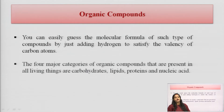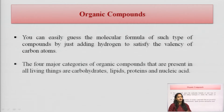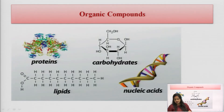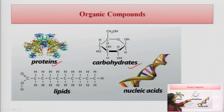The four major categories of organic compounds present in all living things are carbohydrates, lipids, proteins, and nucleic acids. Proteins have a carbon and hydrogen chain. Carbohydrates include examples like glucose, lactose, and maltose.